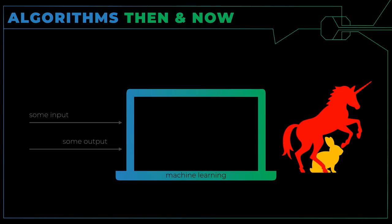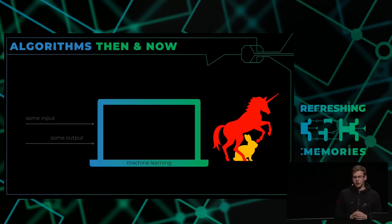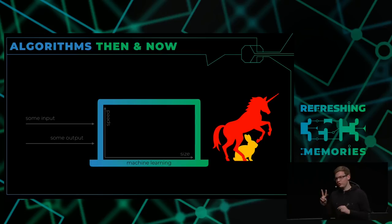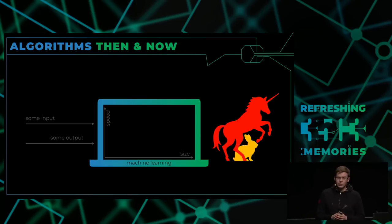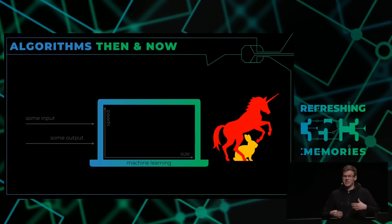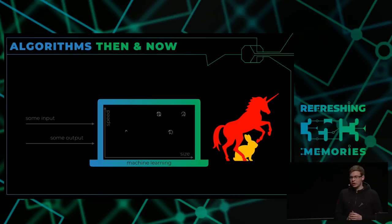Wenn man sagt, wir haben zwei Arten von Tieren — also Einhörner und Hasen — und wir suchen einen Algorithmus, der uns sagt, ist das jetzt ein Einhorn oder ein Hase? Wir können das mit Machine Learning machen. Das Erste, was wir brauchen, ist eine gewisse Menge an Eingaben. Also ich suche mir zwei Merkmale, die mir sagen, das ist entweder ein Einhorn oder ein Hase. Diese Dinge nennen wir Features, Eigenschaften, und die beschreiben eine gewisse Sache, was wir klassifizieren wollen. Die Klasse ist in dem Fall das Tier.